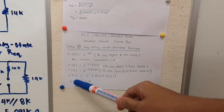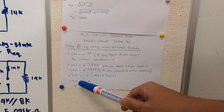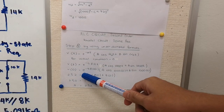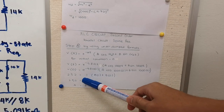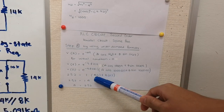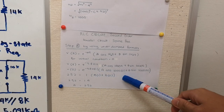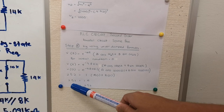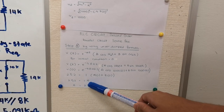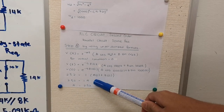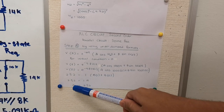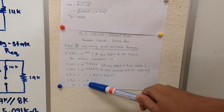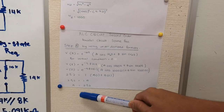Applying the initial condition at T equals zero: e to the power of zero equals 1, cos(0) equals 1, and sin(0) equals 0. Therefore 2.52 equals A times 1, since B times 0 equals zero. So A equals 2.52.